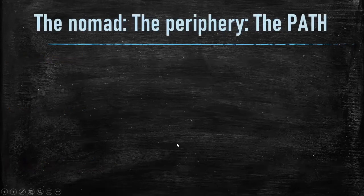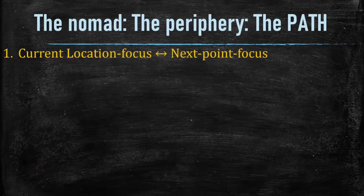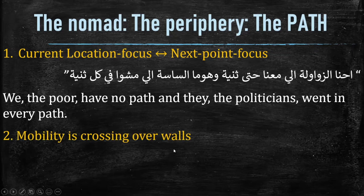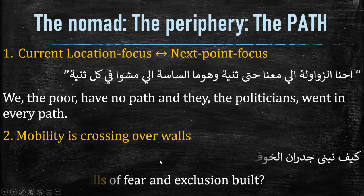The first perspective is the nomad. The focus is on moving to the next point — that person is on the move, and the main preoccupation is how to move to the next point. There is a focus on the journey towards the destination, on how to make that path accessible and easy to follow through to the end. The hypothesis is confirmed: mobility is crossing over walls, and I found proof of that.